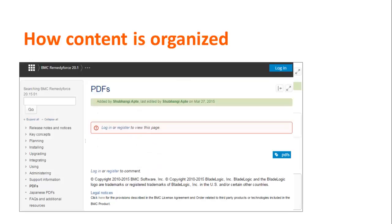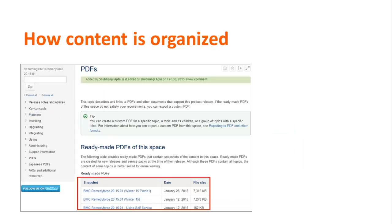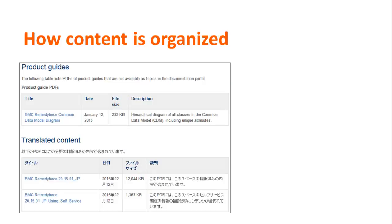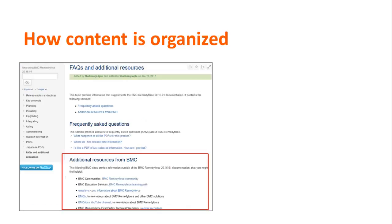To access PDFs of the whole documentation, if you are accessing online documentation from the application, click the login button. If you are accessing online documentation from docs.bmc.com, log on using your BMC support ID. You will see a list of ready-made PDFs that contain the complete documentation set for BMC RemedyForce and self-service, as well as PDFs not available as topics in the documentation. When localized help is available in Japanese, it is provided in the translated content section. The FAQs and additional resources page provides links to the BMC RemedyForce community, education services, YouTube channel, and webinar recordings.